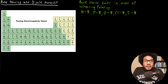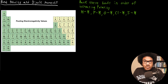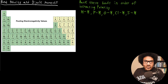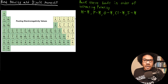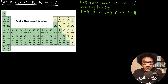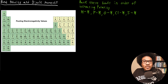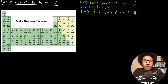Depending on the electronegativity of the atoms involved in the bond, you get different degrees of polarity for that polar covalent bond. Let's look at an example to illustrate this concept. The question asks us to rank these bonds in order of increasing polarity.